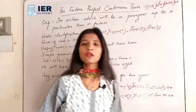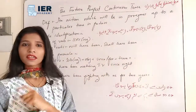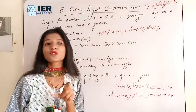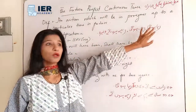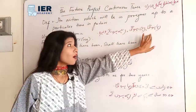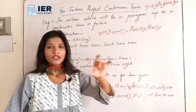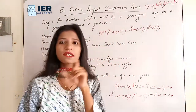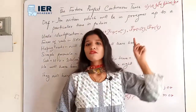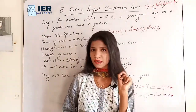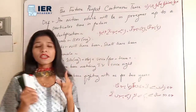We can use Future Perfect Continuous Tense when the last words of a sentence are رہا ہوگا، رہی ہوگی، رہے ہوں گے and similar words. When such words appear at the end of a sentence, we recognize it as Future Perfect Continuous Tense.